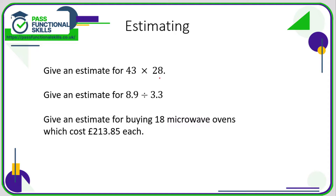What we're going to do is, instead of using 43 and 28, let's call 43 just 40, and let's call 28 just 30. And 40 times 30 is quite easy — 4 times 3 is 12, we ignored those two zeros so we can put them back. So an estimate for 43 times 28 would be 1,200. In that first example, we rounded everything to the nearest 10.